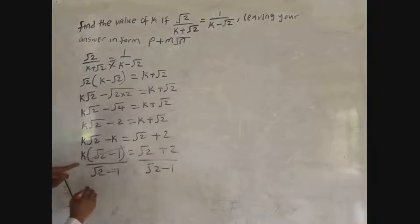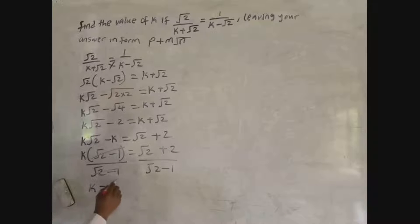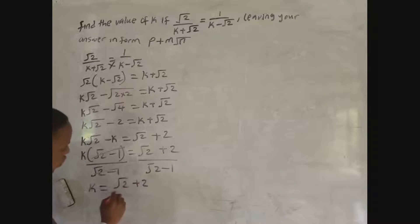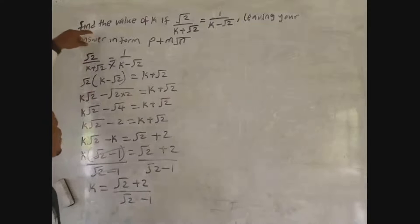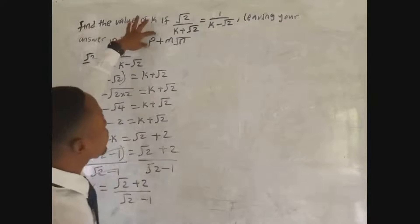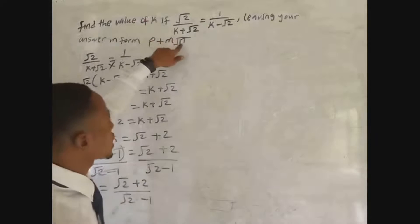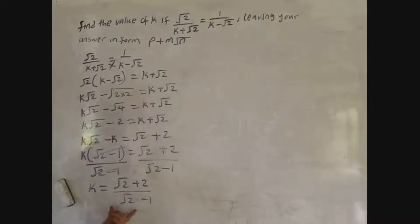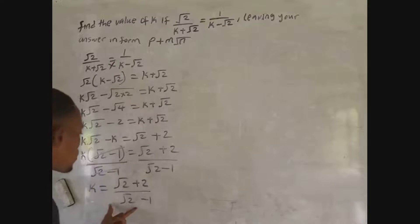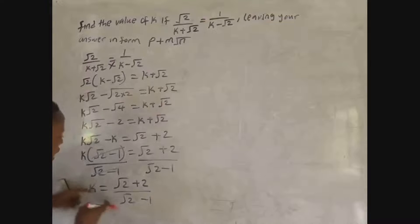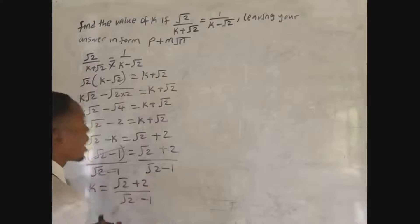When we divide both sides by (√2 − 1), we cancel that factor, and we get k equals (√2 + 2) over (√2 − 1). That's the value of k. But we need to leave our answer in the form p + n√2, so this is not yet our final answer. We need to rationalize.